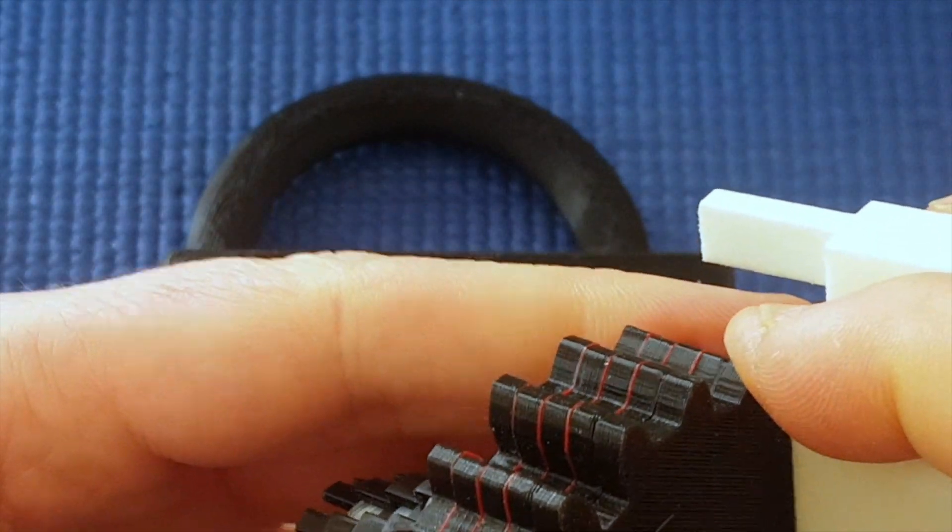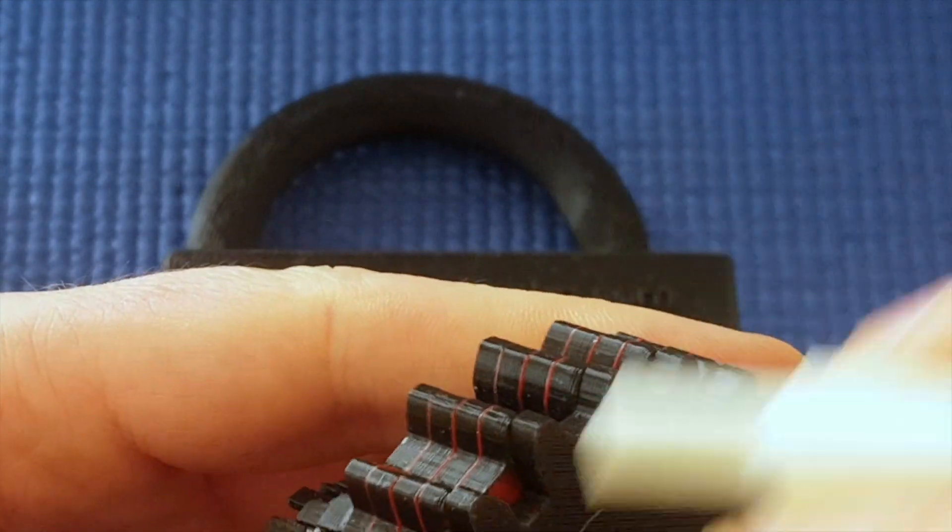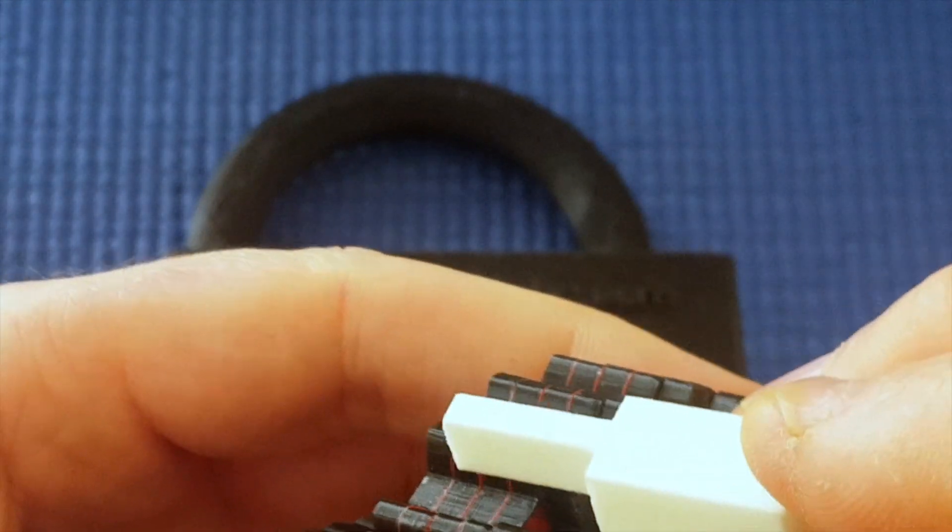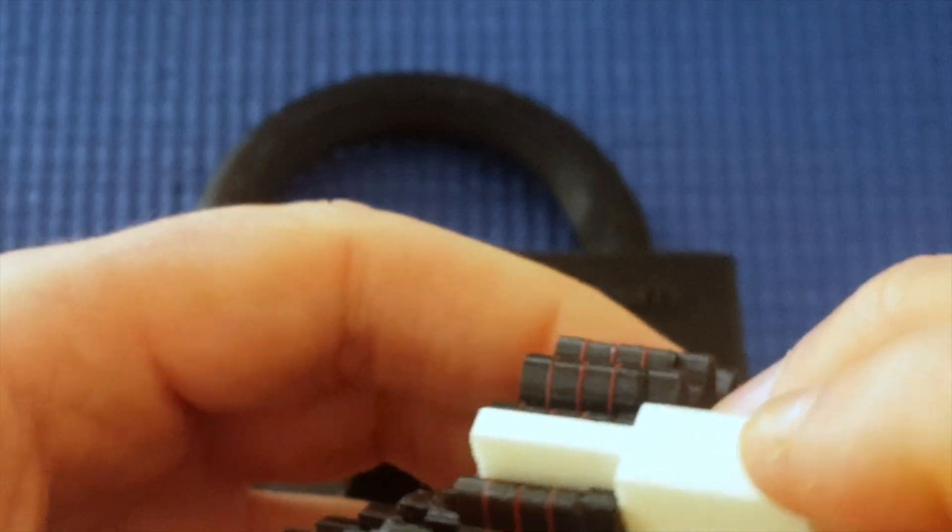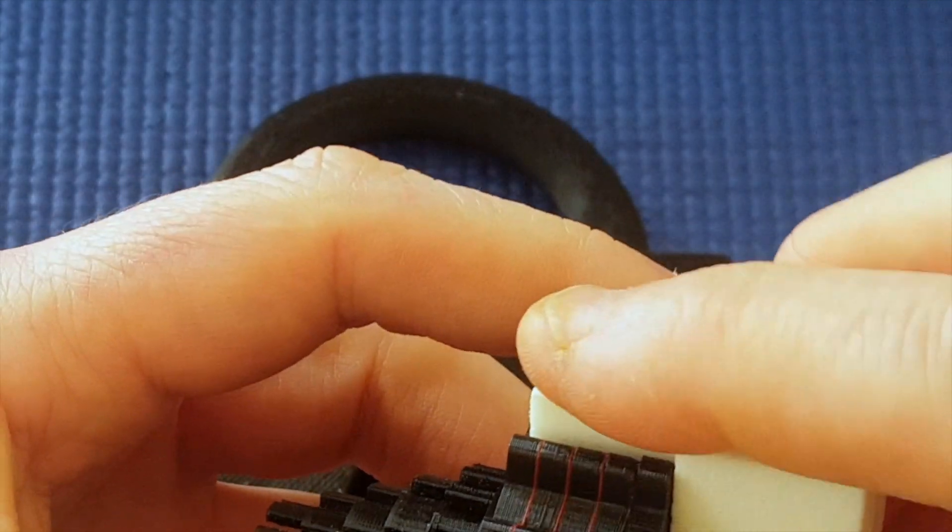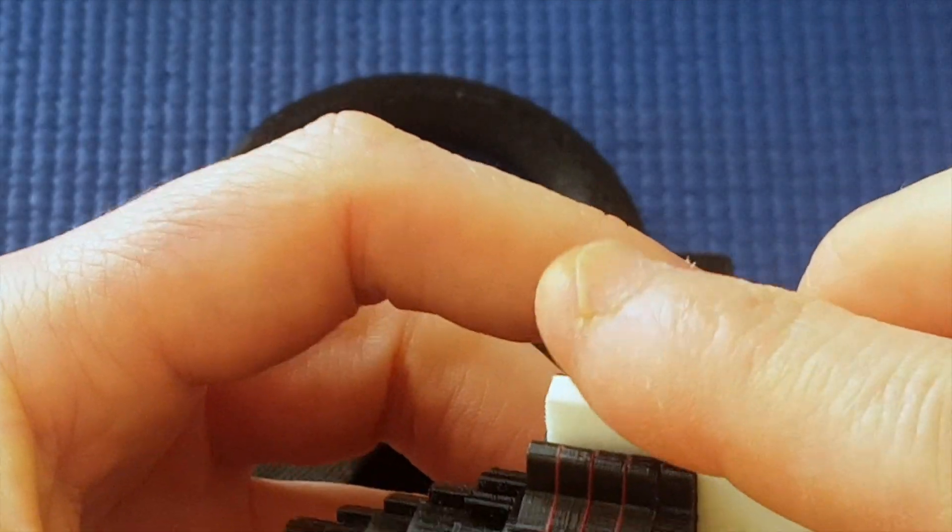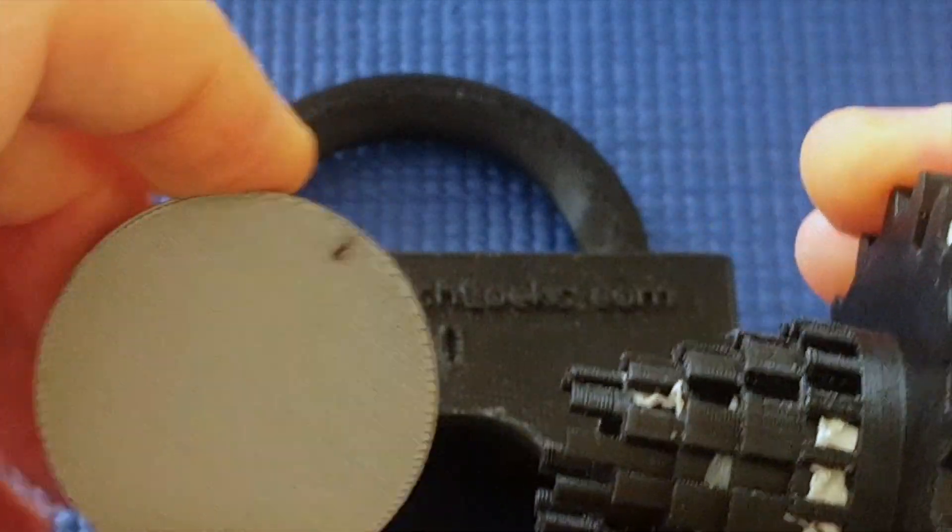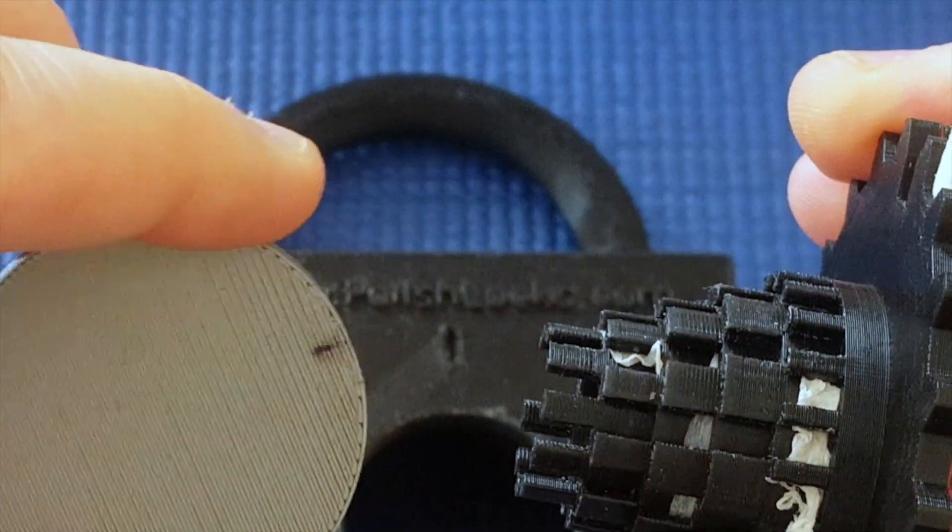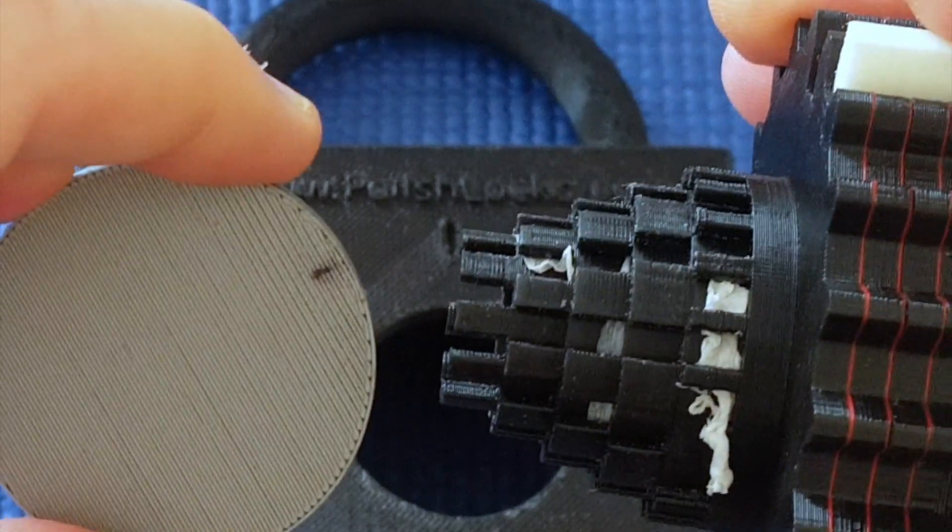But when this first wheel is moved to a true gate, then the bar hits the next wheel along. And the flex, that slight flex, is enough, I think, to see a slight turn in this knob when I apply enough pressure.